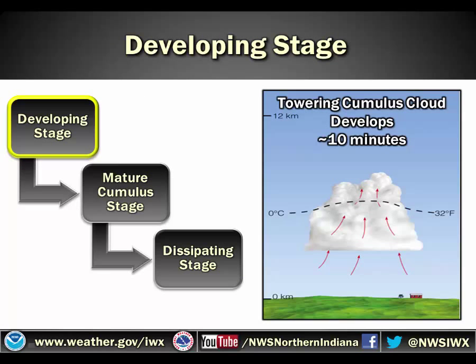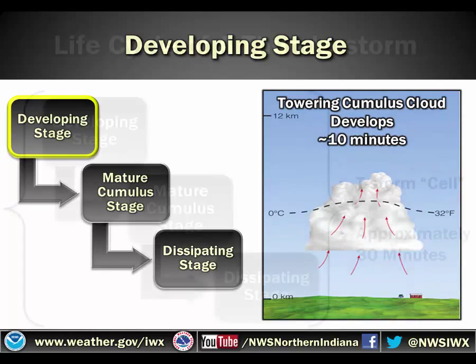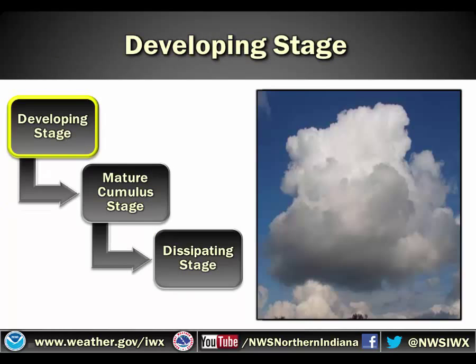The developing stage of a storm cell lasts about 10 minutes, and it's the towering cumulus stage. This is where you might see clouds outside that would look like big cotton balls or big pieces of popcorn as it's starting to rise — that's the beginning stages of a storm starting to develop. This is what one of those clouds might look like when you are looking outside your window or when you are storm spotting.